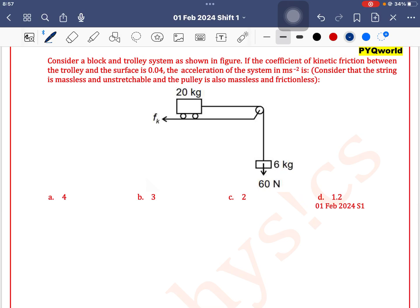Consider a block and trolley system as shown in figure. If the coefficient of kinetic friction between the trolley and the surface is 0.04, the acceleration of the system is an easy type of question. Now what is happening here? Let's look at the acceleration.